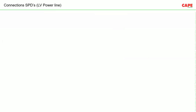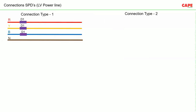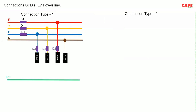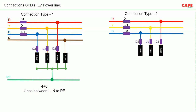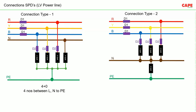We need to discuss the connections of SPDs. There are two types. In connection type 1 (4+0), all three lines and neutral are directly connected to Earth, with a fuse between all three lines and the SPD. In connection type 2 (3+1), all three lines are first connected to neutral, and from neutral there is a connection to PE — three connections from line to neutral, and one from neutral to PE.